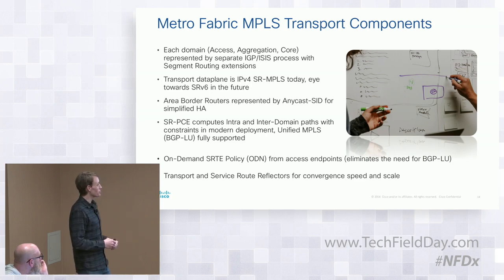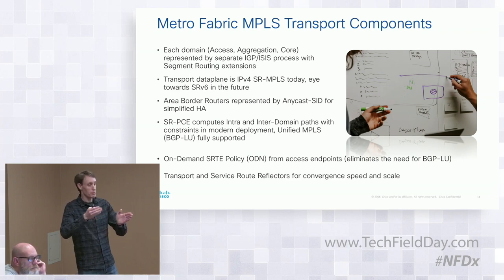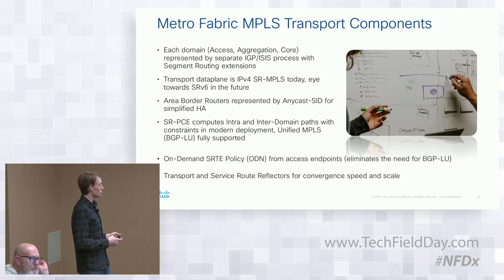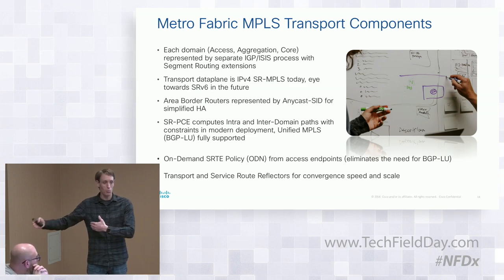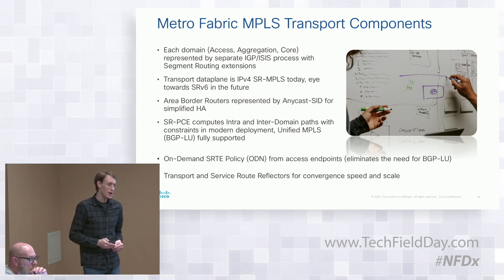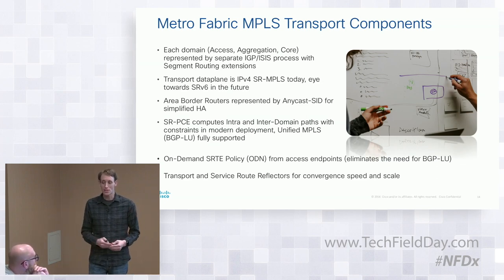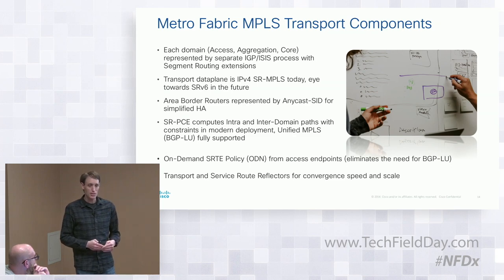Here's a bit of an eye chart of the transport components — what makes up that end-to-end segment routing transport path. Each domain, whether it's an access area, aggregation area, pre-aggregation, or core, is actually a different ISIS process. It's not just a level-two with a level-one hanging off of it — this is really having a discrete process at every boundary of the network. How things work end-to-end is where the PCE comes into play. The PCE glues together all those inter-domain paths.